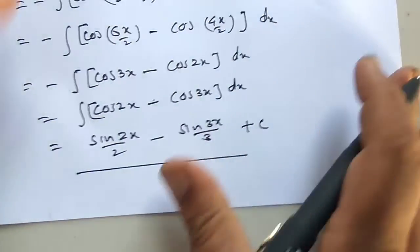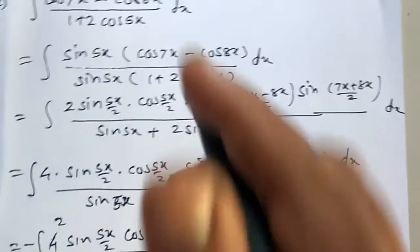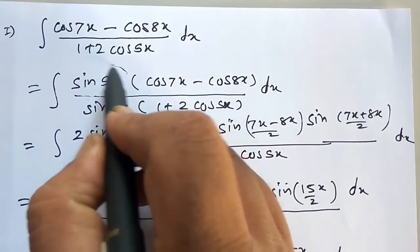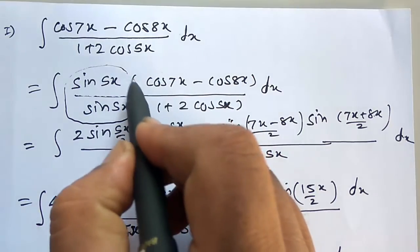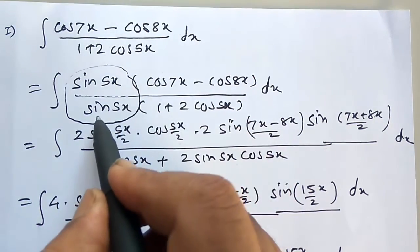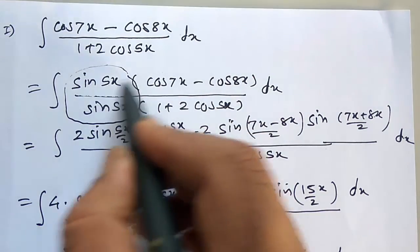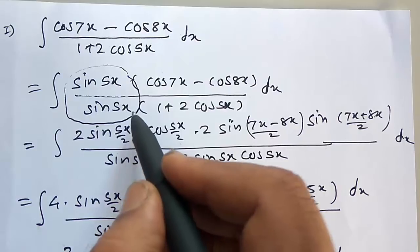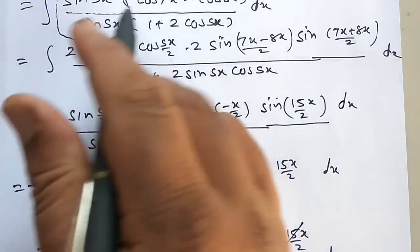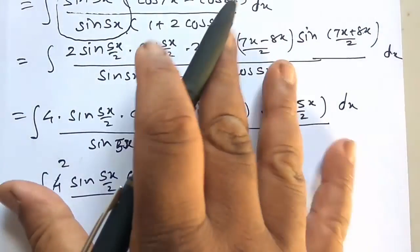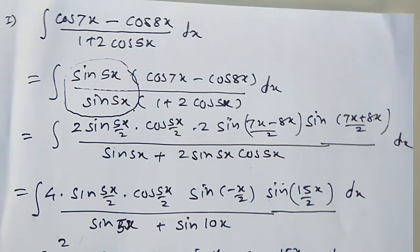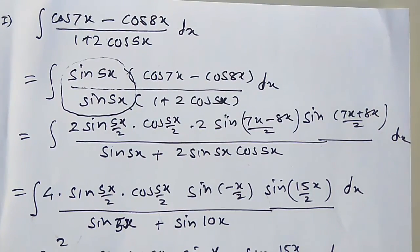So this is the answer. In this way, if you know the hint — the hint is very important here — multiplying by sin 5x to the numerator and denominator. Otherwise it is not possible to solve such type of example. Thank you for watching my video.